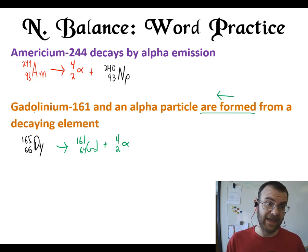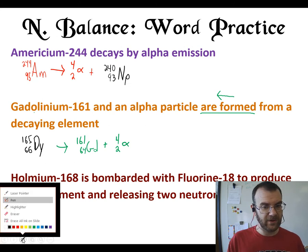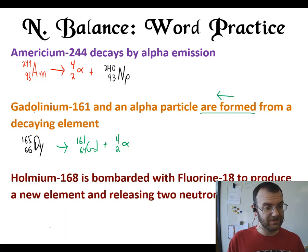But it can get more complicated than that. As you see here with this holmium 168 is bombarded with fluorine 18 to produce another element and releasing two neutrons. So there's a lot going on here. To start with at least it's in the right order. So we can start at the beginning.